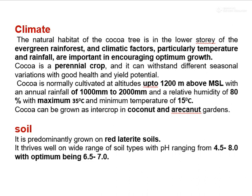Cocoa can be grown as an intercrop in coconut and areca nut gardens. Regarding soil requirement, it is predominantly grown on red laterite soil. It thrives well on a wide range of soil types with pH ranging from 4.5 to 8, with optimum being 6.5 to 7.